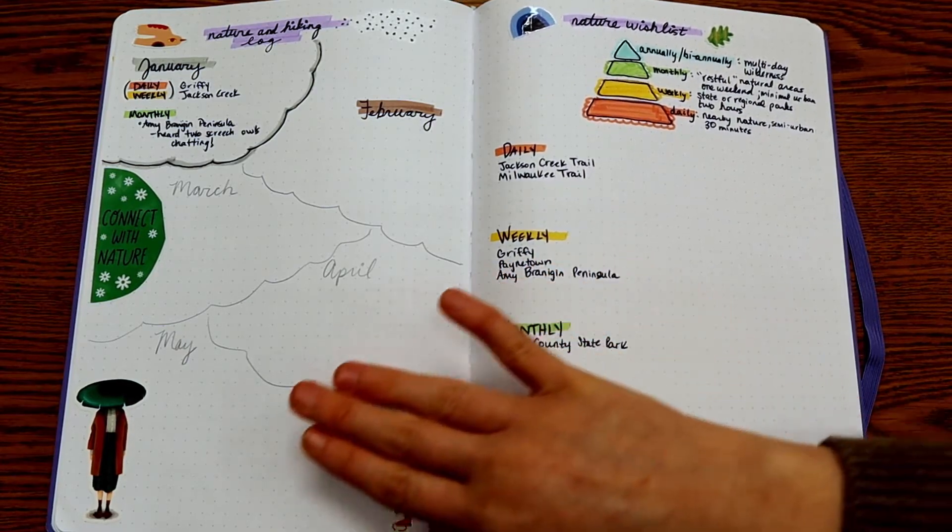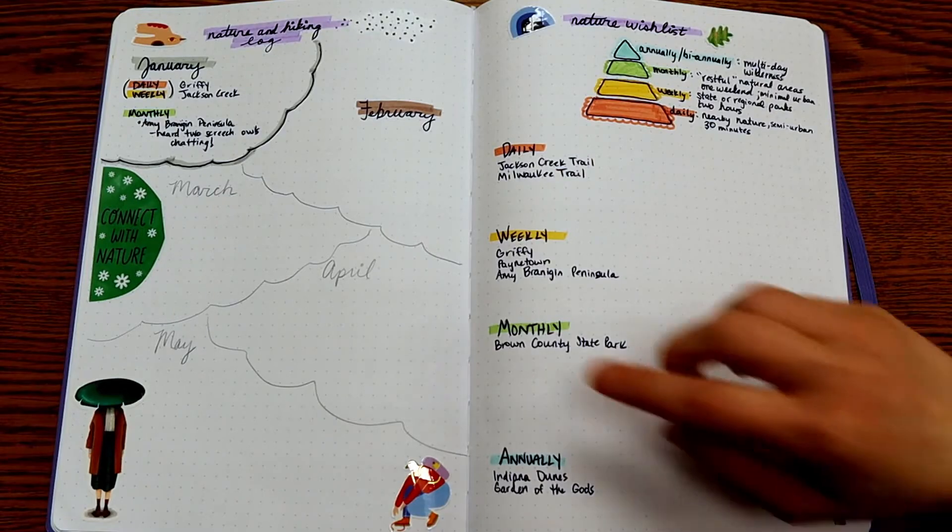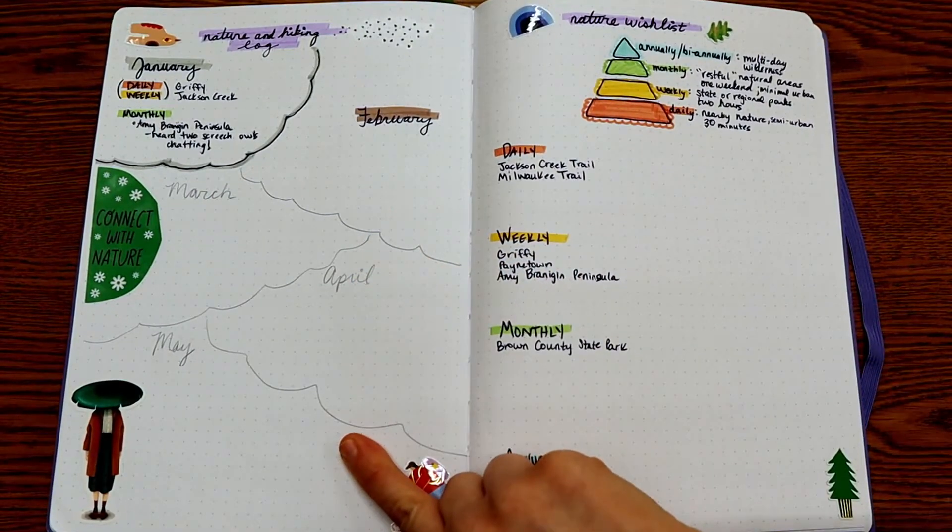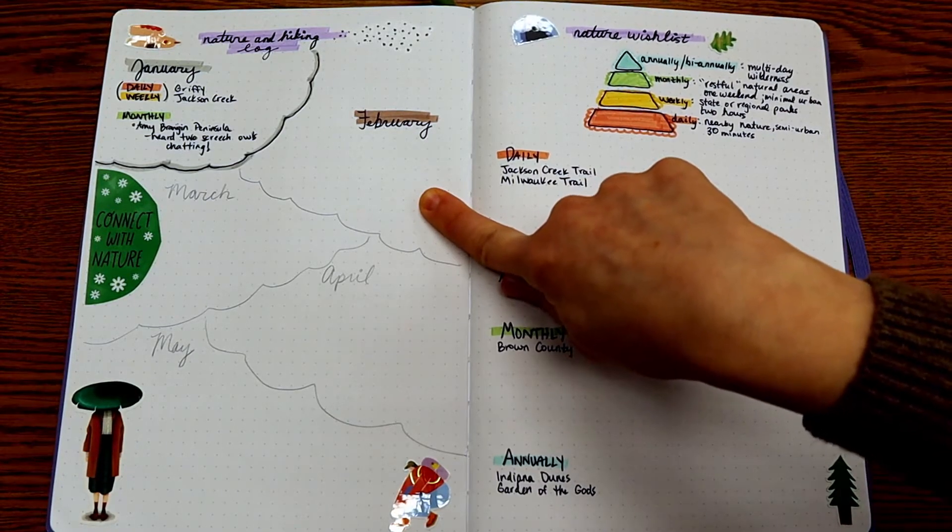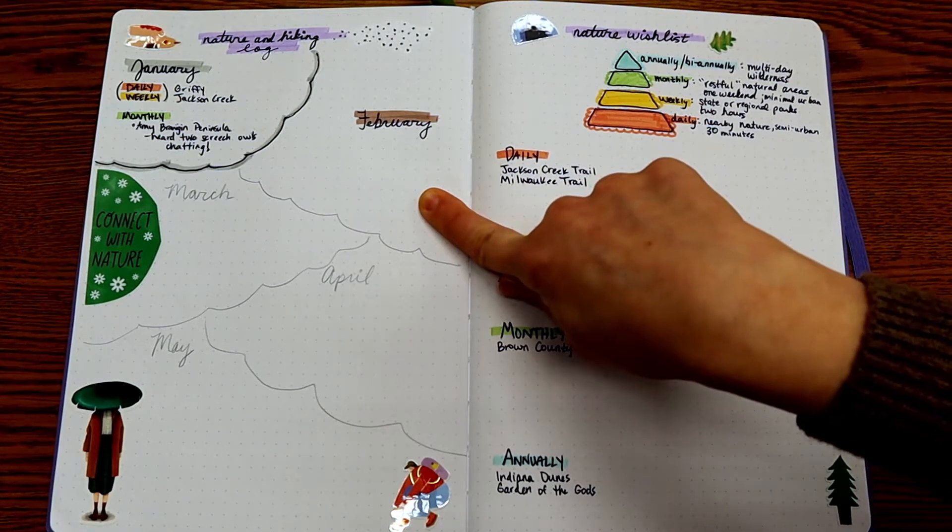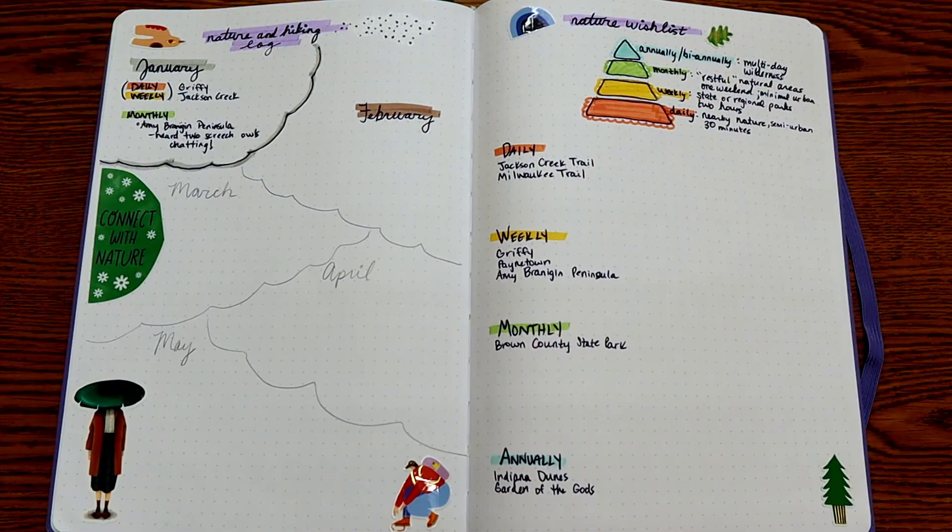Then once I go, I can stick it over here in the month section. So I did this part in pencil because I might spend a ton of time outside in February. So I'll need more space. Or I might spend hardly any time outside. And so I can erase this as I want to and make more room other places for other months.